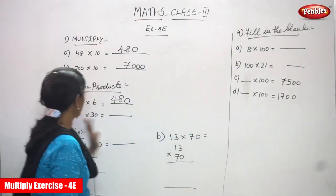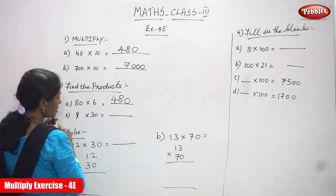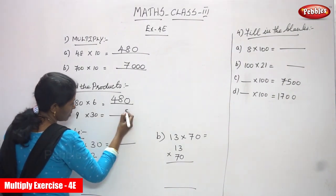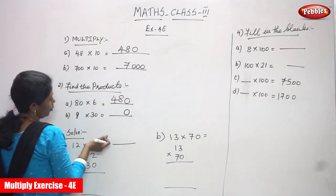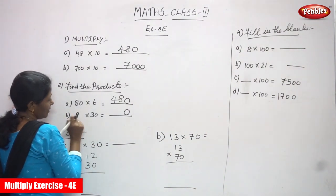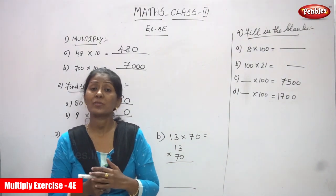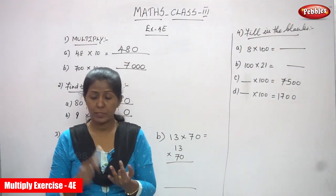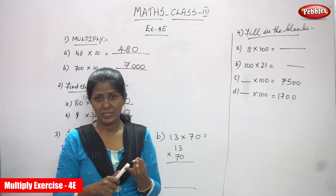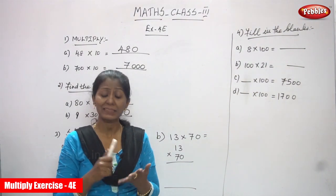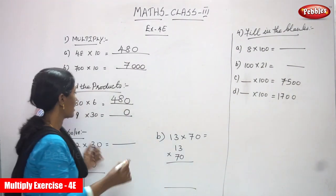The answer is 4800. Next: 9 into 30. 30 is three tens, so there is only one zero. First write the zero at the end, then multiply the remaining numbers: 9 into 3. Using the three table: 3 ones are 3, 3 twos are 6, 3 threes are 9, 3 fours are 12, 3 fives are 15, 3 sixes are 18, 3 sevens are 21, 3 eights are 24, and 3 nines are 27. The answer is 27, so the full answer is 270.